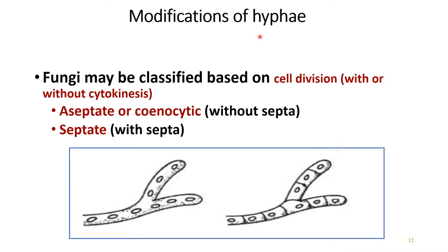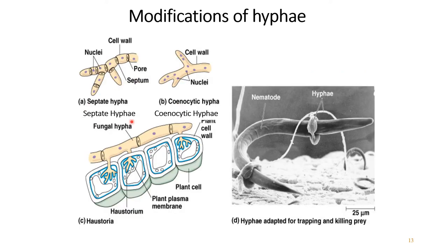Modifications of hyphae: fungi may be classified based on cell division, with or without cytokinesis. First is aseptate or coenocytic — meaning without septa. When septa are present it is called septate. Another modification is the haustorium, which acts as a parasitic hyphae on plant and animal cells. Another modification is hyphae adapted for trapping and killing prey.